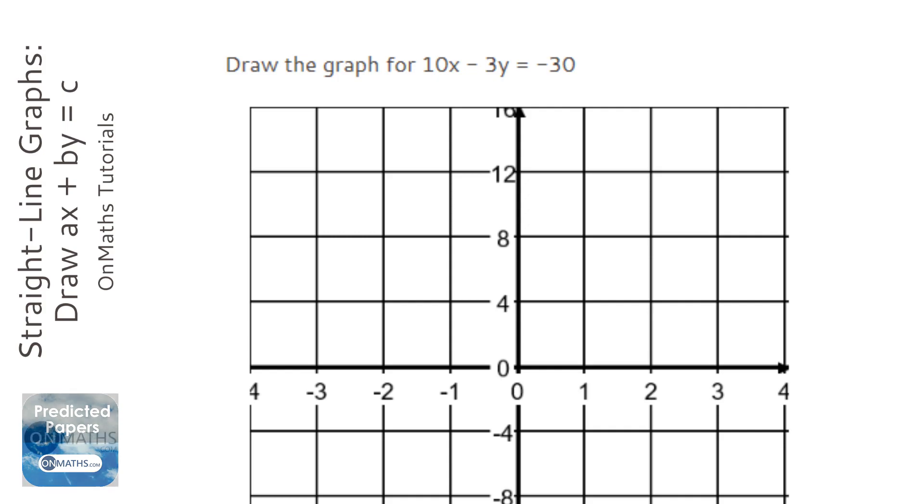So we're going to find out the y-intercept first, and the way we're going to do that is at the y-intercept we know that x equals 0. Now if x equals 0 we can rewrite that equation with x equals 0 so that gets rid of the x term.